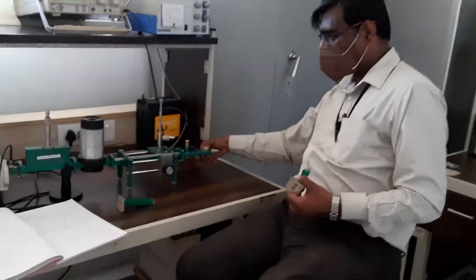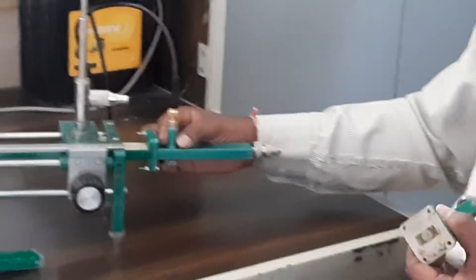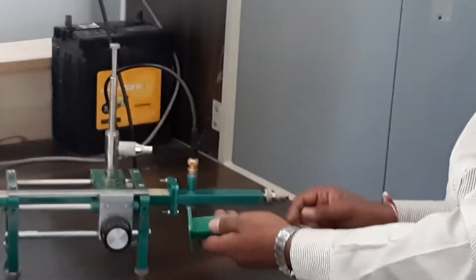This one is actually a detector which is having a probe. So both are different. This is a movable short. This is a detector.